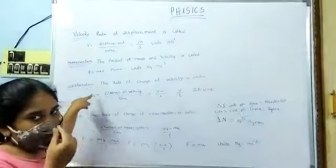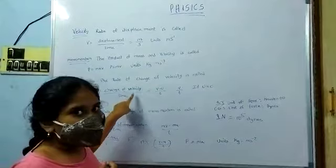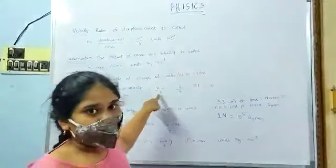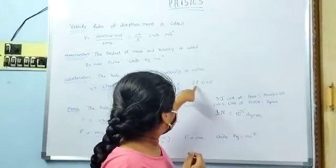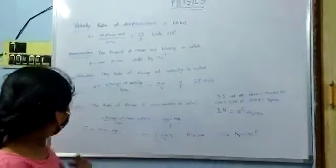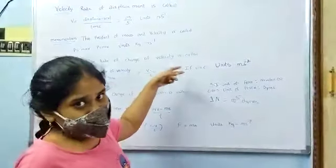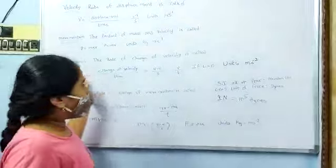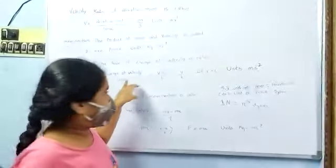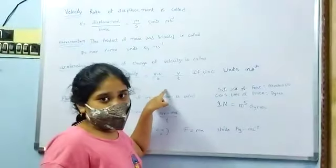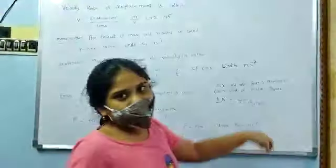Next, acceleration. The rate of change of velocity is called acceleration. A is equal to change of velocity by time, equal to v minus u by t, equal to v by t if u is equal to zero. Units: meter per second squared.